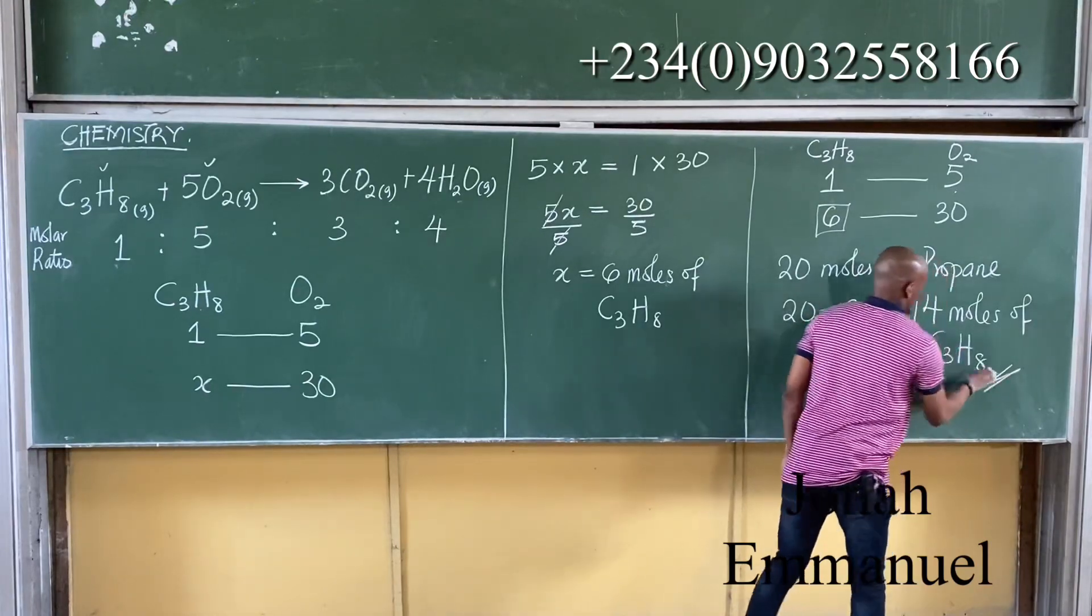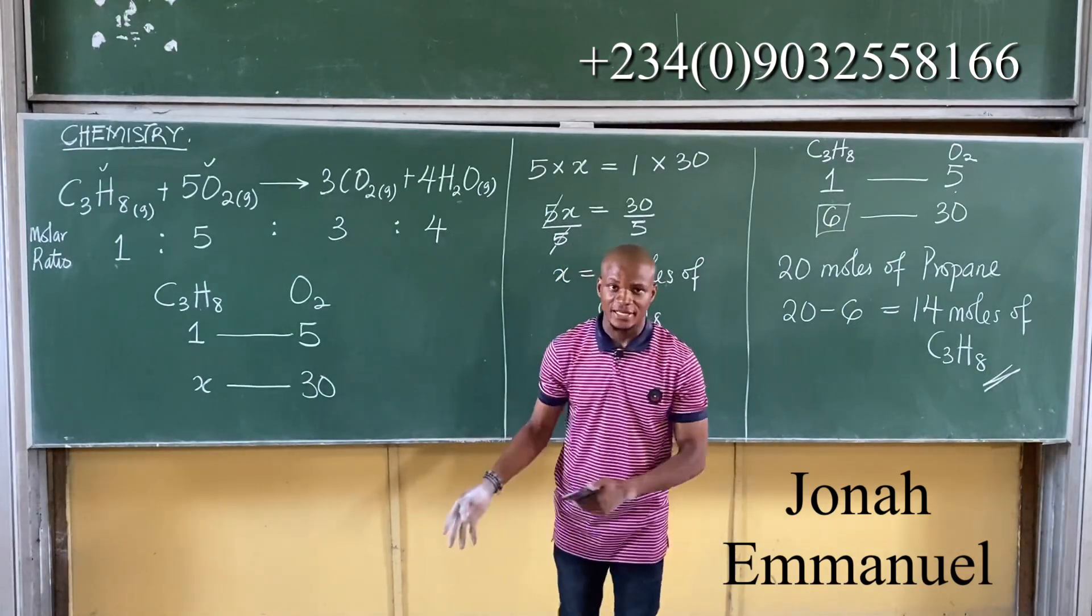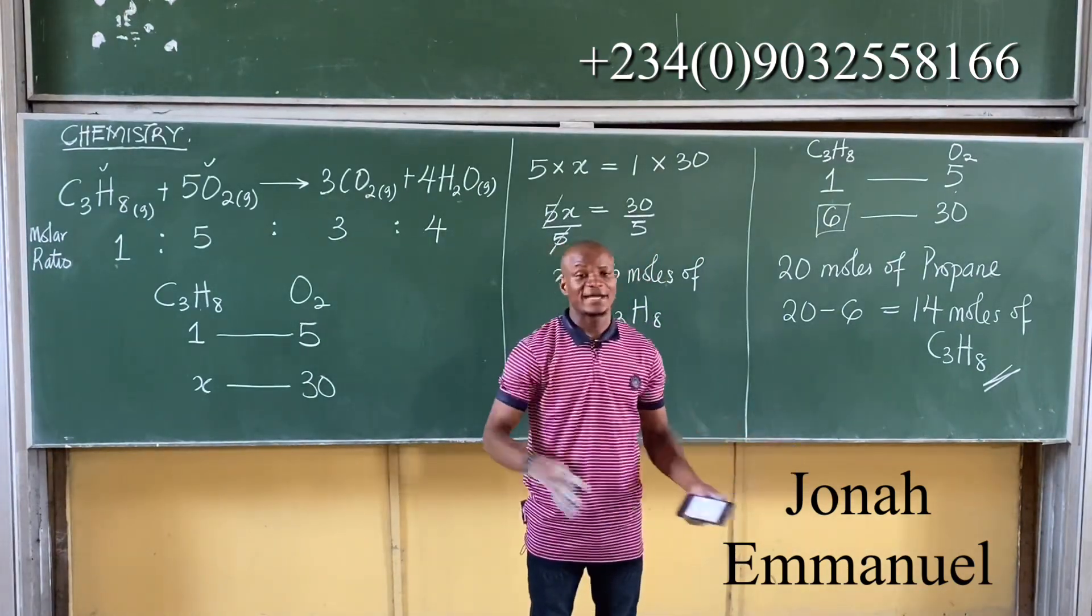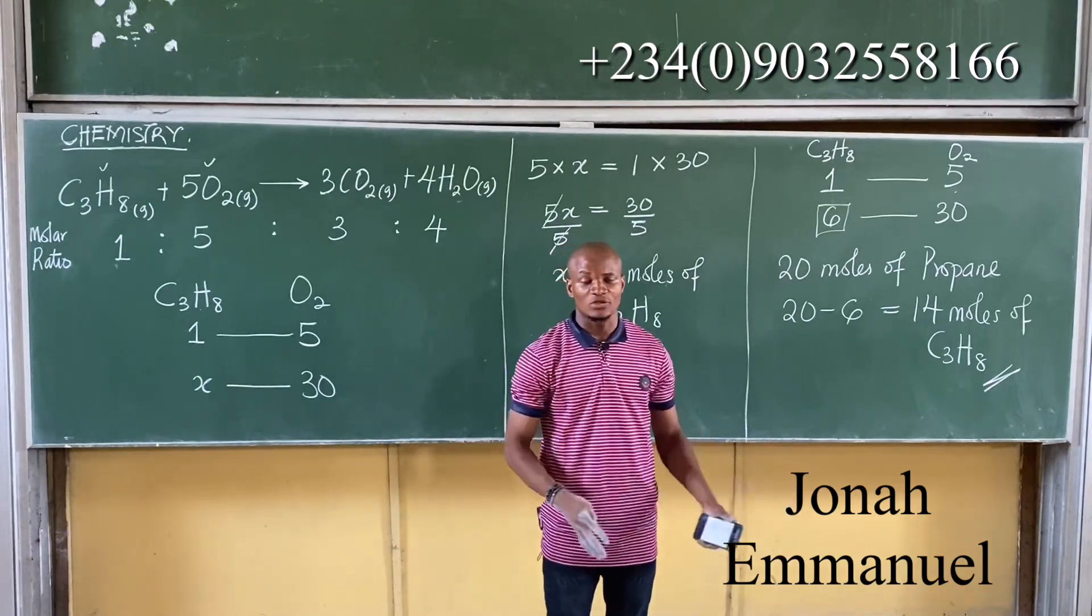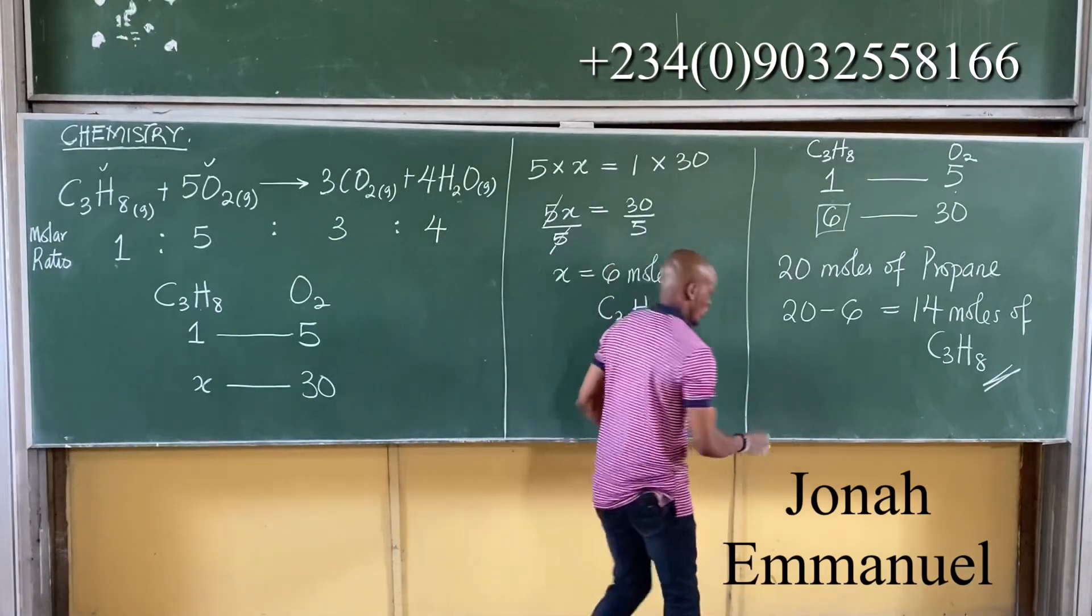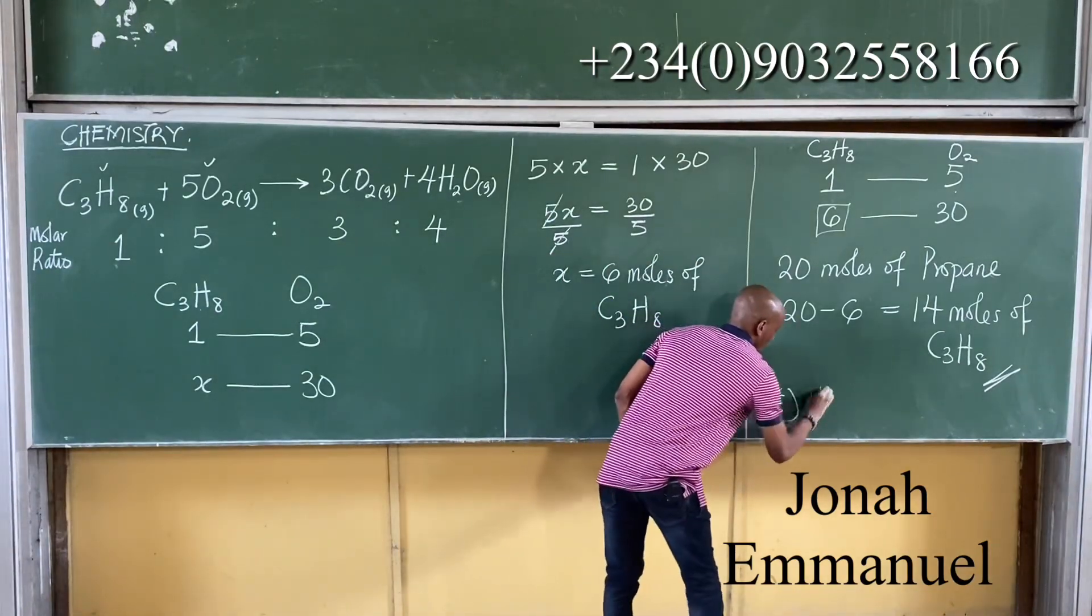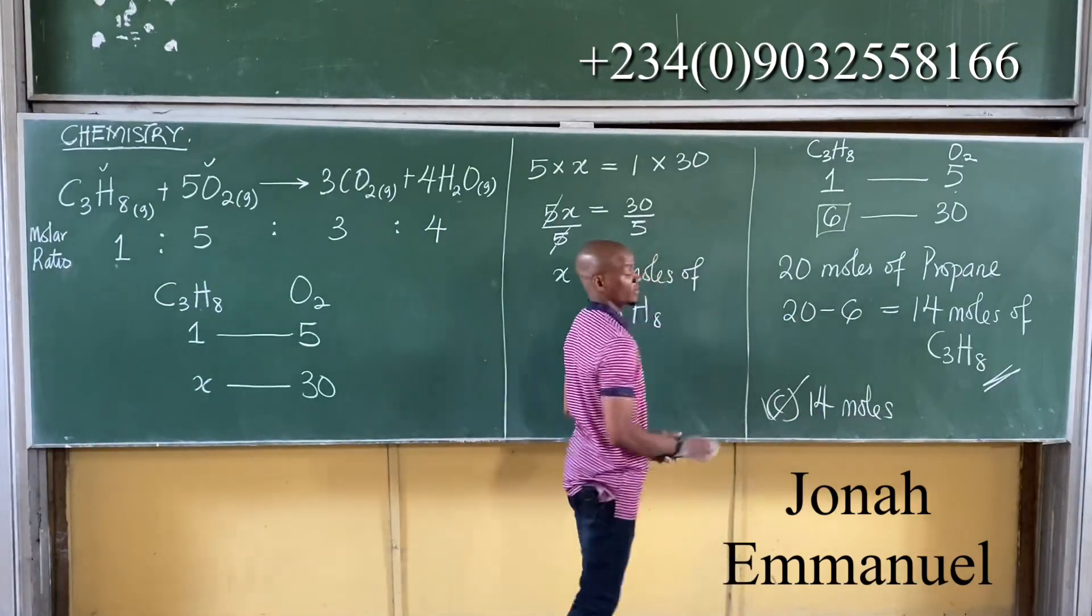So this is how you get your answer. So when they say how many moles of propane is left unreacted, I only needed 6. I had 20. So out of 20, I use 6. So I am left with just 14 moles. So this was option C. Option C said 14 moles. So this becomes the answer to that question, 14 moles of propane.